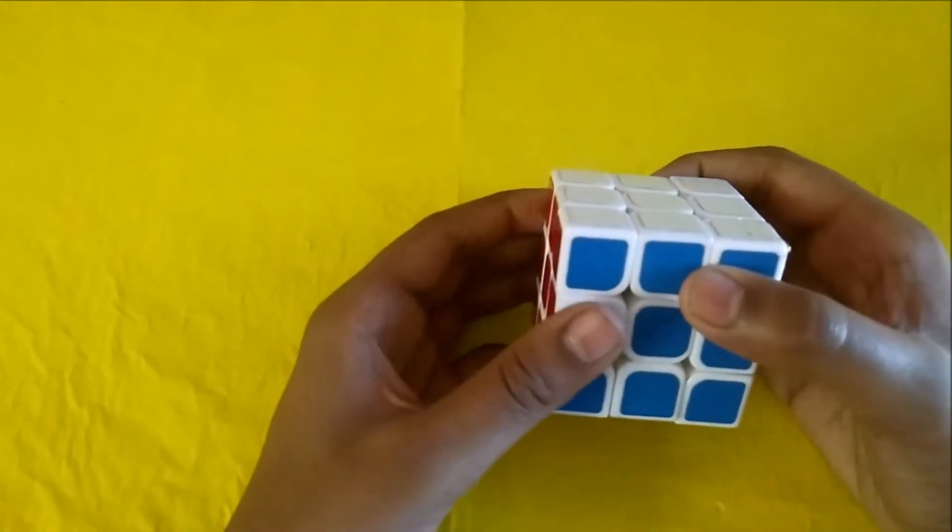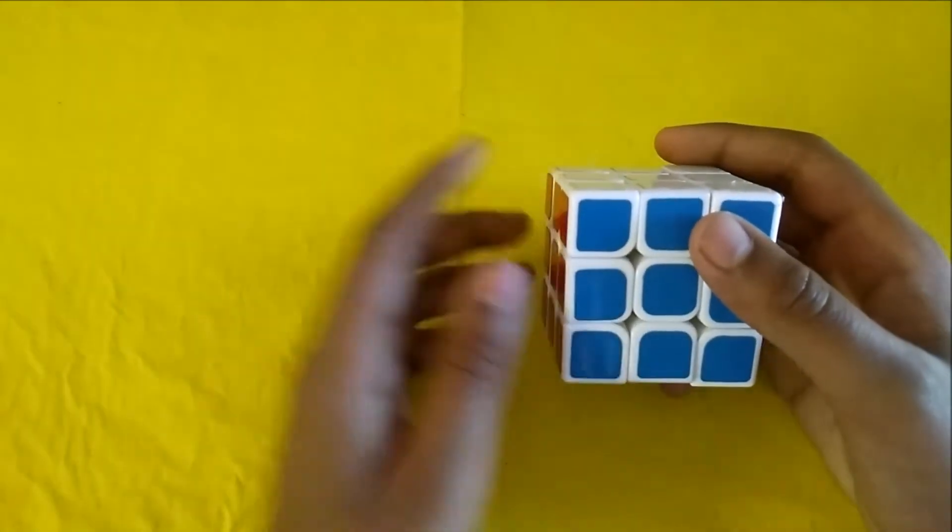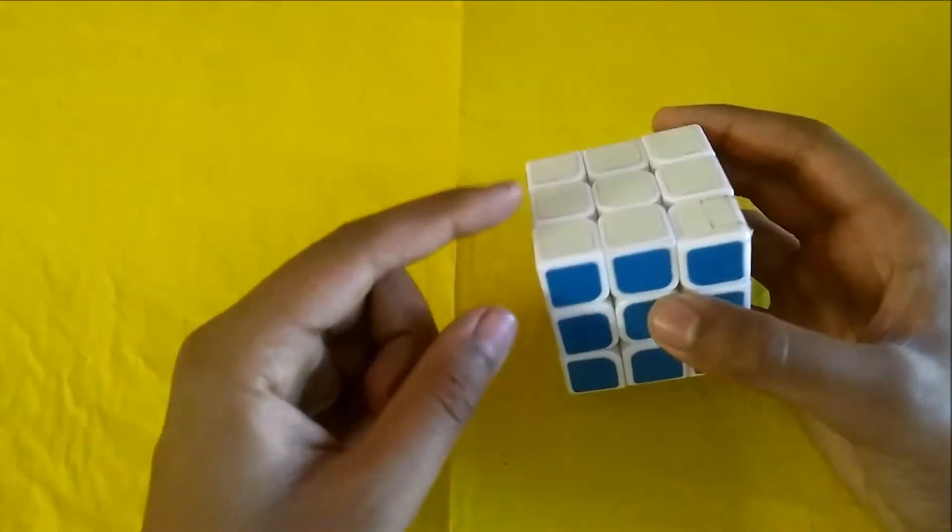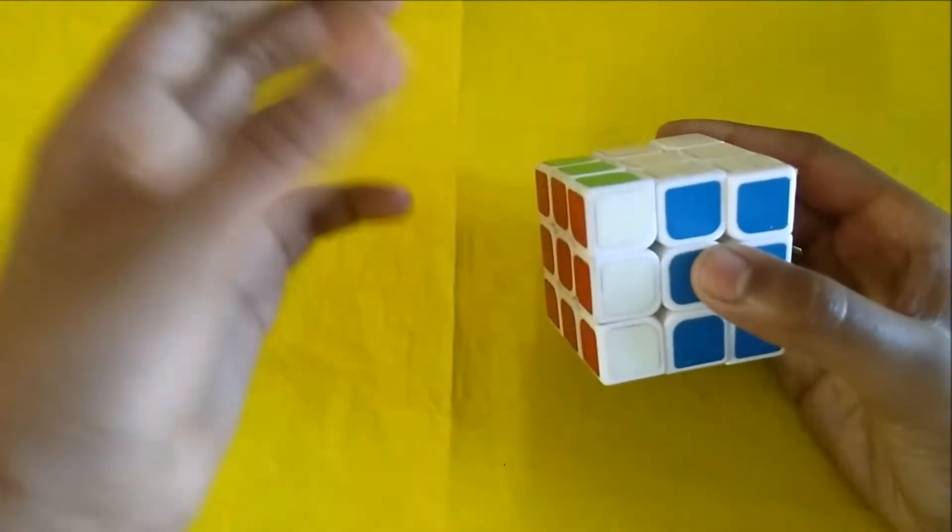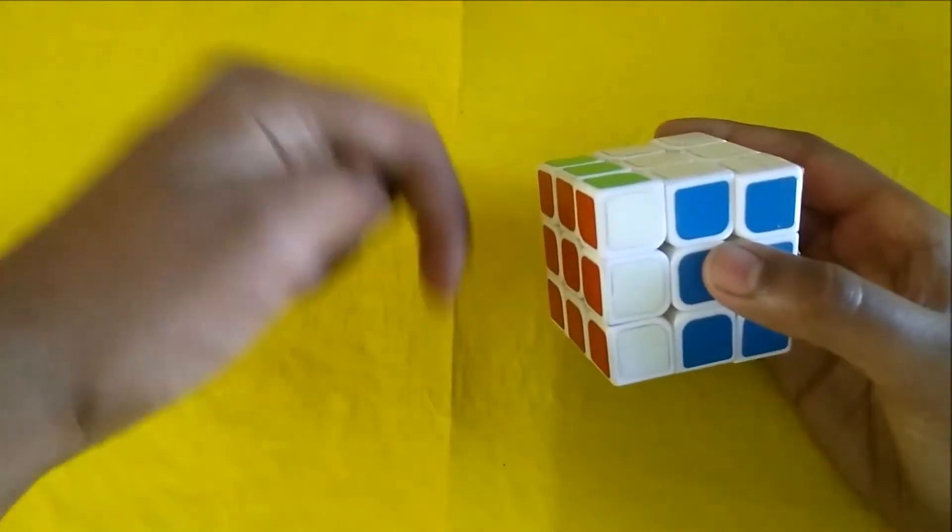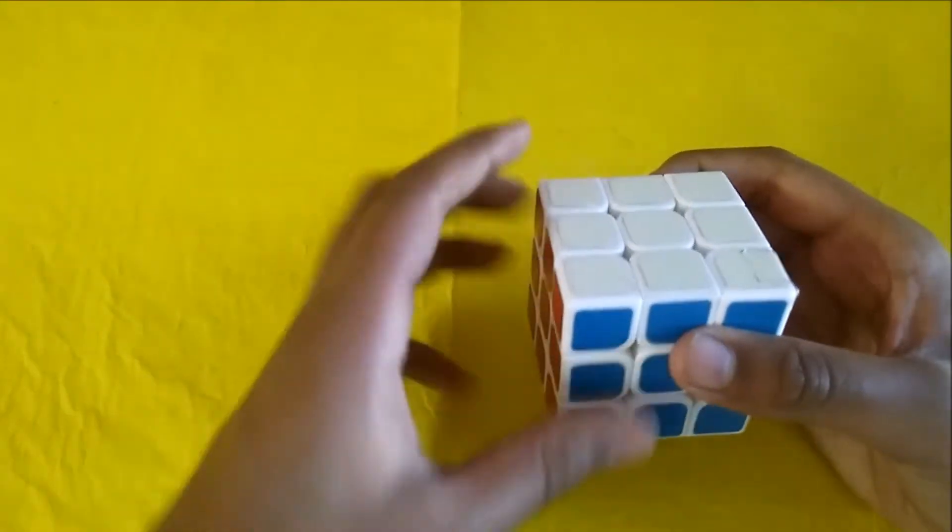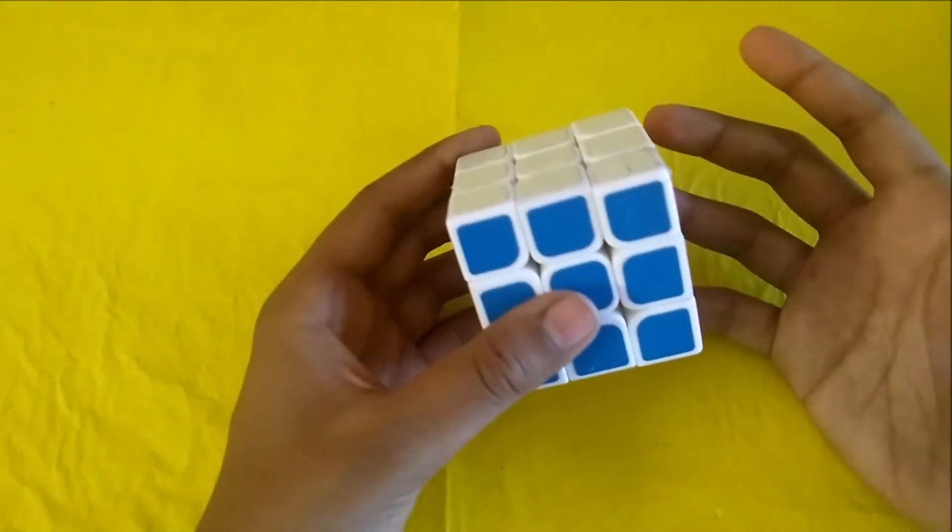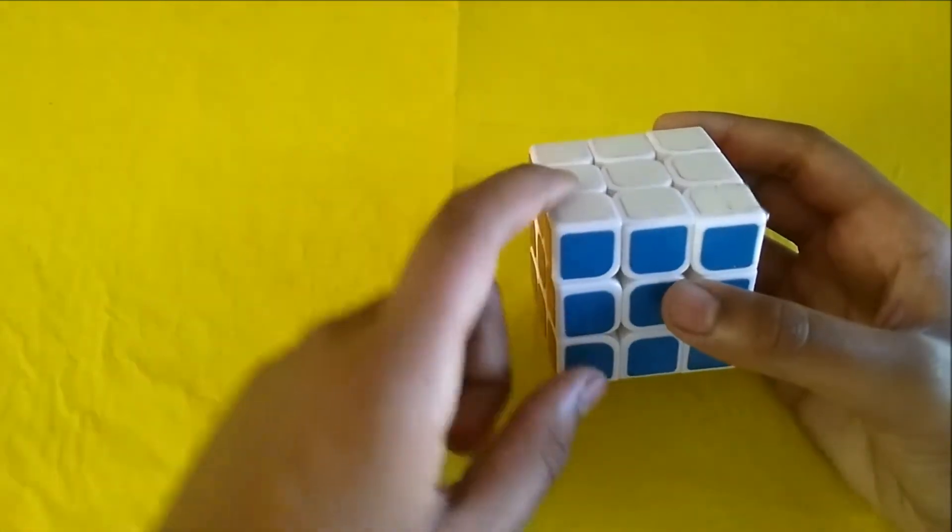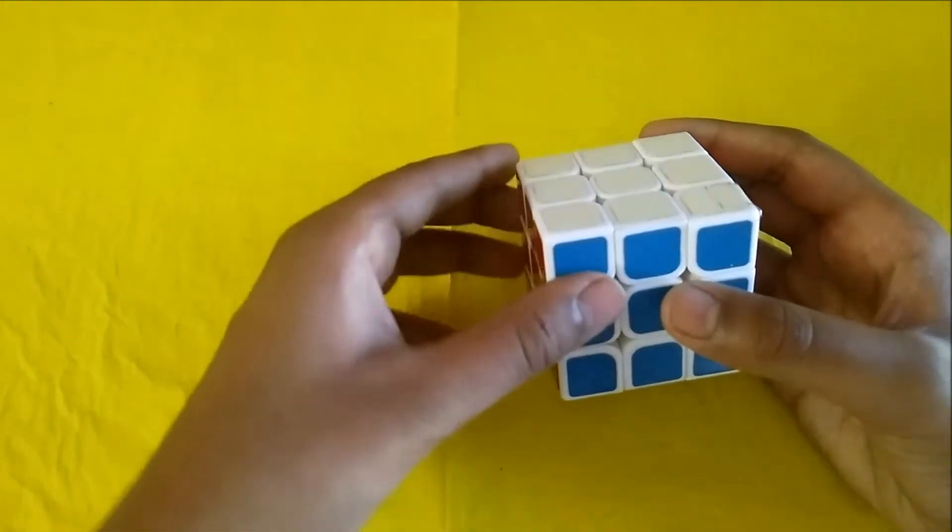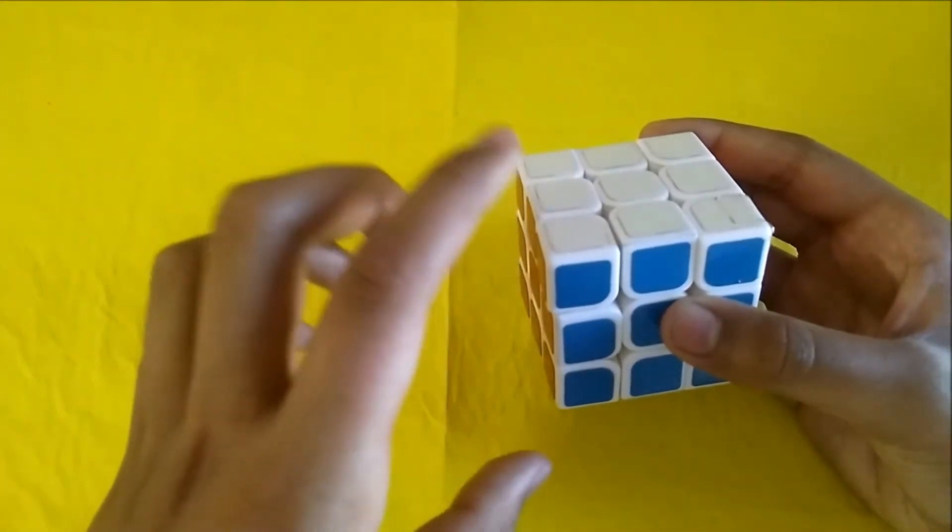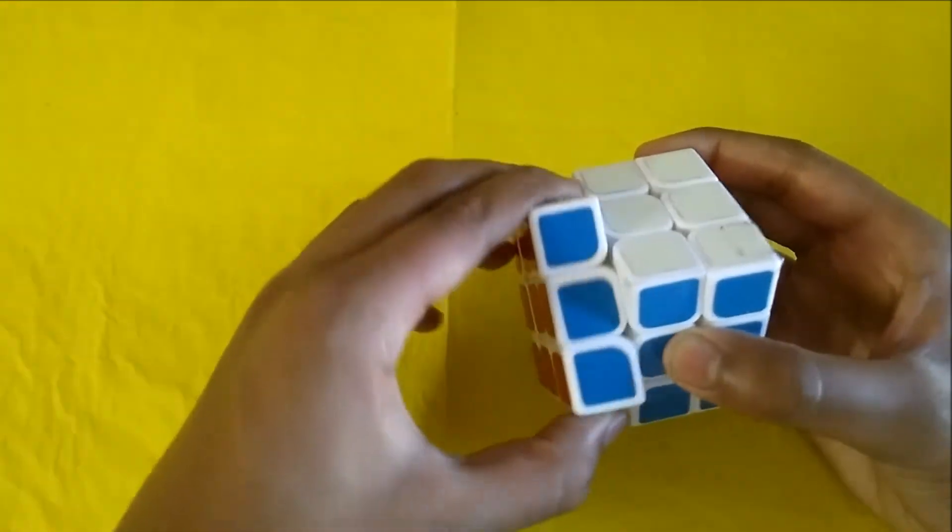Now then comes the left layer. Left layer is just opposite, this one. In L, if I say only L, you are going to turn it downwards. If I say L prime, you are going to move it upwards. It's a little bit confusing. I am going to tell you again: if L, you are going to move it downwards, and if it is L prime, you are going to do upwards.